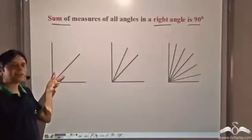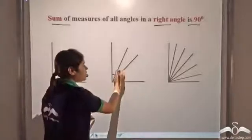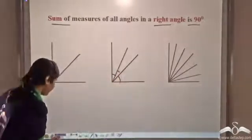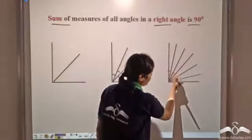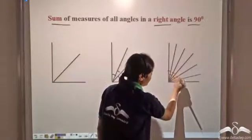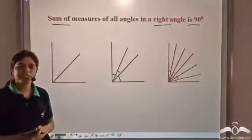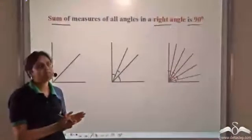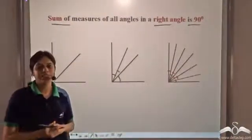These two angles add up to ninety degrees. These three angles add up to ninety degrees. And one, two, three, four, five, six — these six angles also add up to ninety degrees. So, the sum of all angles in a right angle is equal to ninety degrees.